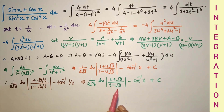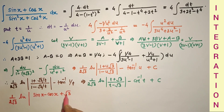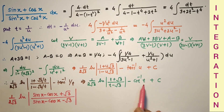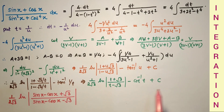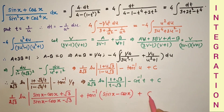Since u = 1/t and t = sin x − cos x, substituting back gives (1/(2√3)) ln|(t + √3)/(t − √3)| − cot⁻¹(t) + C, using tan⁻¹(1/x) = cot⁻¹(x). The cot⁻¹(t) = π/2 − tan⁻¹(t), so −cot⁻¹(t) = −π/2 + tan⁻¹(t). Absorbing the constant −π/2 into C, the final answer is (1/(2√3)) ln|(sin x − cos x + √3)/(sin x − cos x − √3)| + tan⁻¹(sin x − cos x) + C.